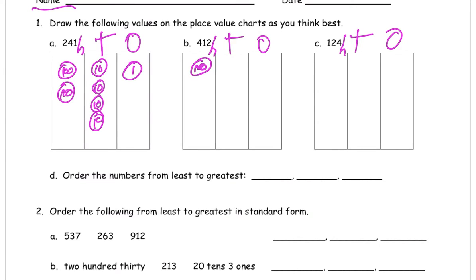Hundreds. One trick for drawing hundreds, sometimes it's easier to write the number 100 first and then draw the circle around it so that you make sure you have the, you can fit the number inside the circle because sometimes you draw the circle too small it won't fit. One ten and two ones.